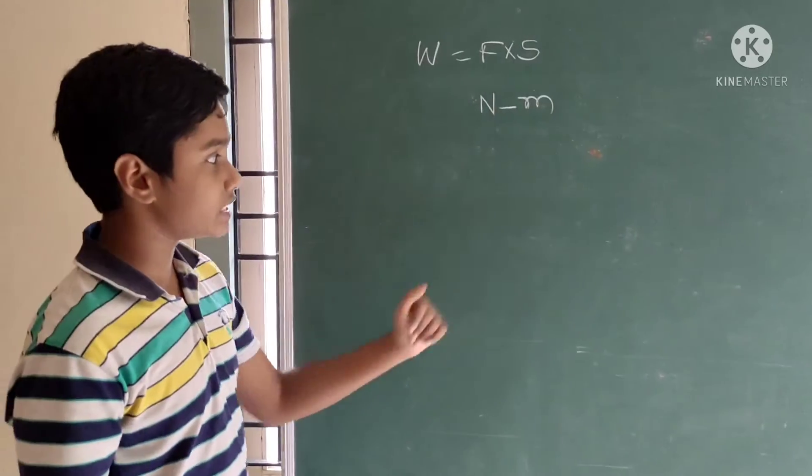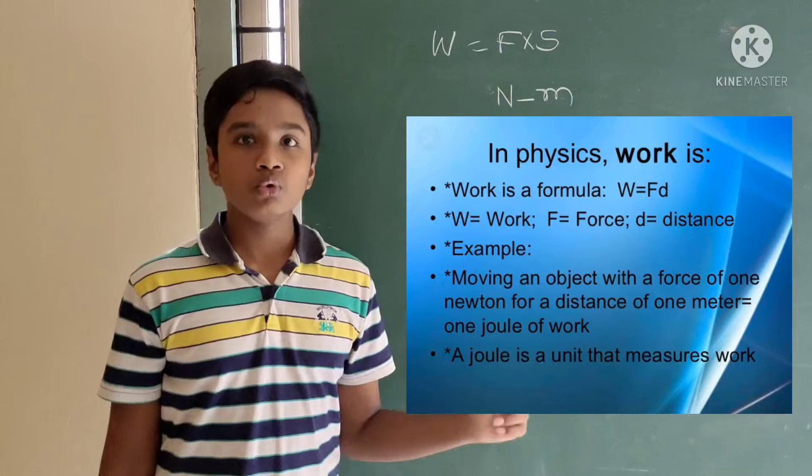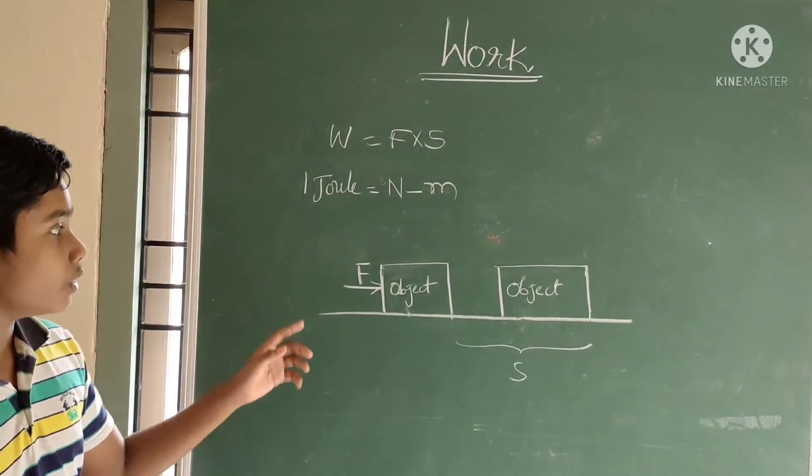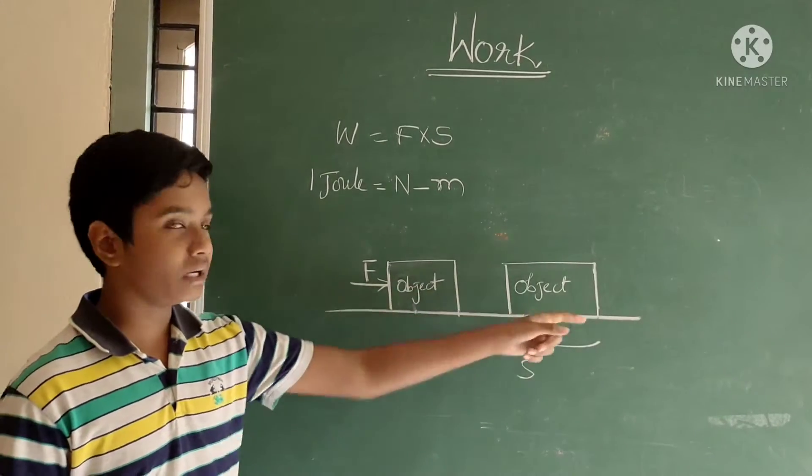One joule of work is equal to one newton of force applied on the object to move one meter distance.